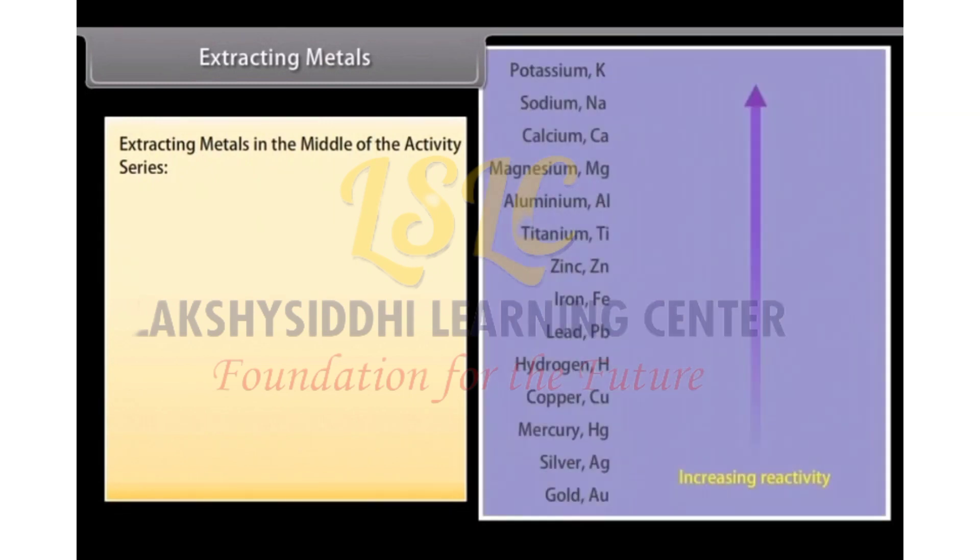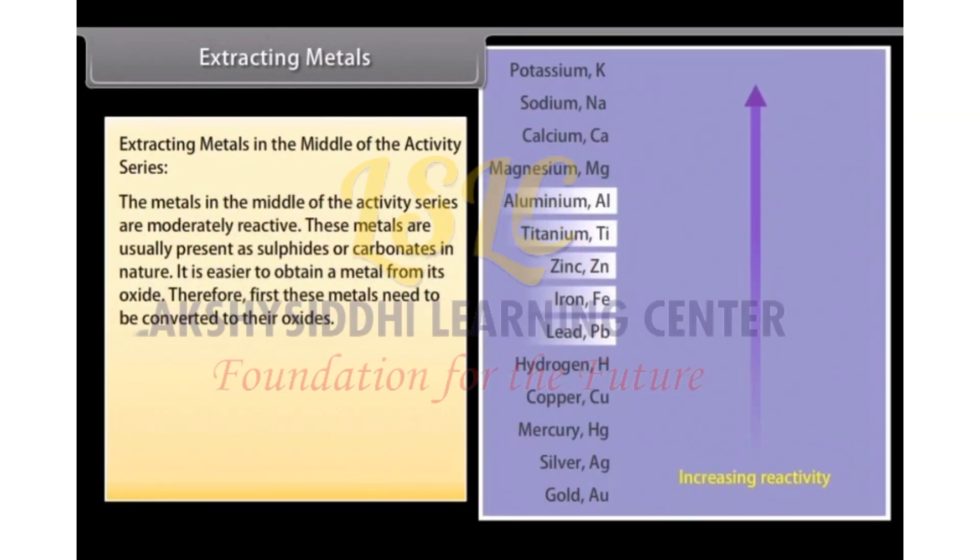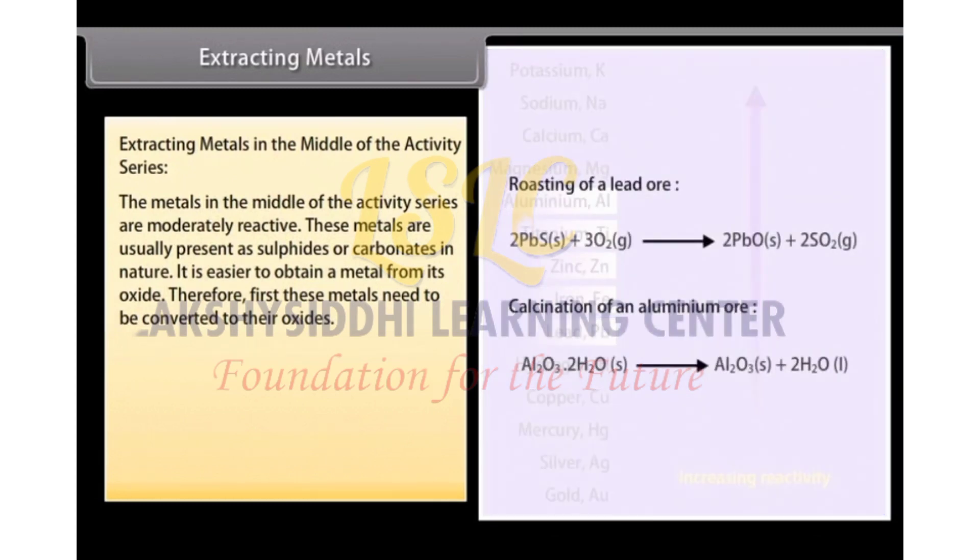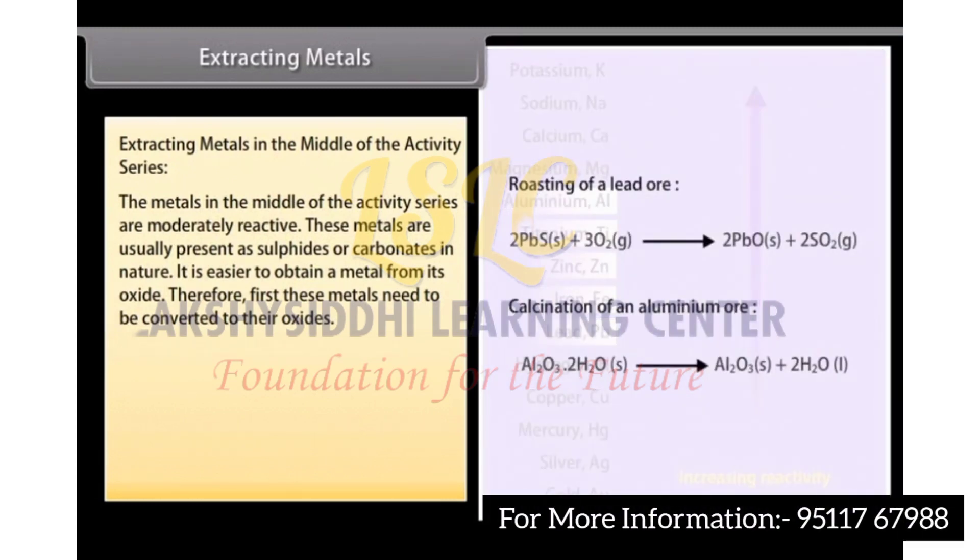Extracting metals in the middle of the activity series. The metals in the middle of the activity series are moderately reactive. These metals are usually present as sulfites or carbonates in nature. It is easier to obtain a metal from its oxide. Therefore,